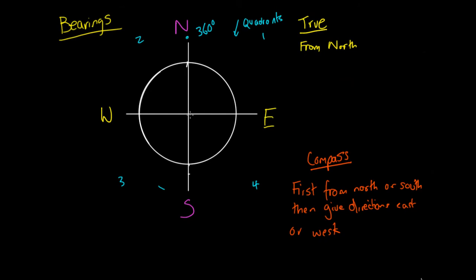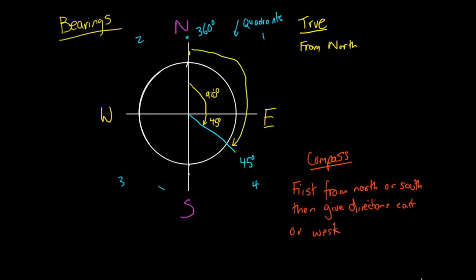Say we have an angle here. We draw a line that goes perfectly straight at a 45-degree angle between these two points. We know that going around the circle we have to go through 90 degrees to get to the east direction, and then down another 45 degrees to reach our 45-degree angle. So from north we have to go 90 plus 45, or 135 degrees, to get to our angle. So this bearing is 135 degrees true.